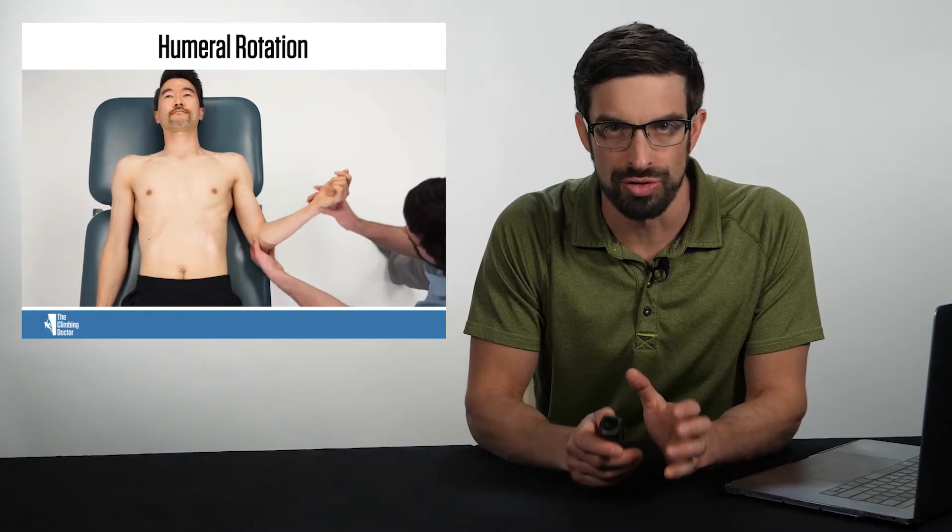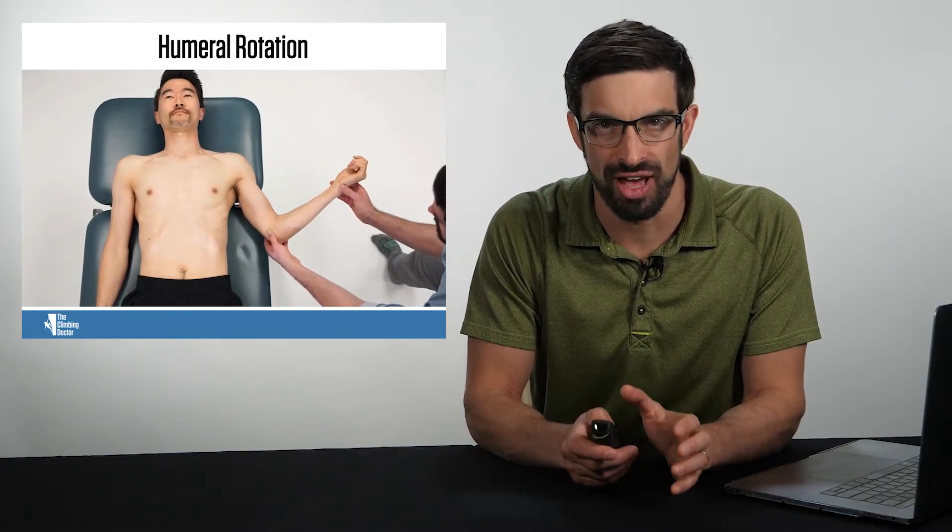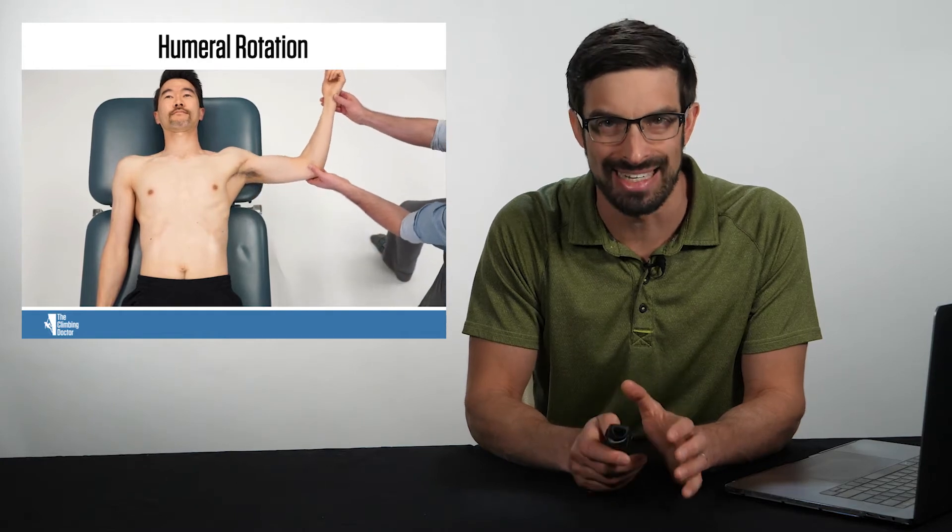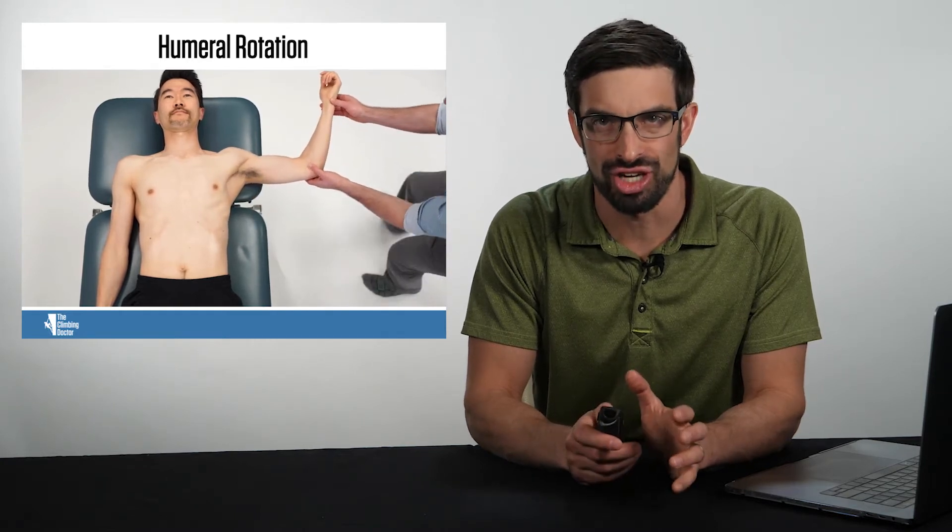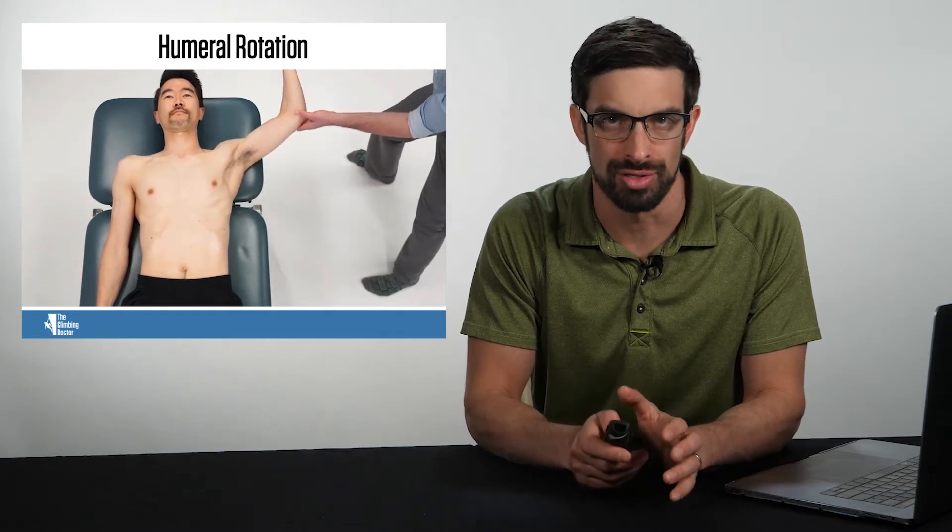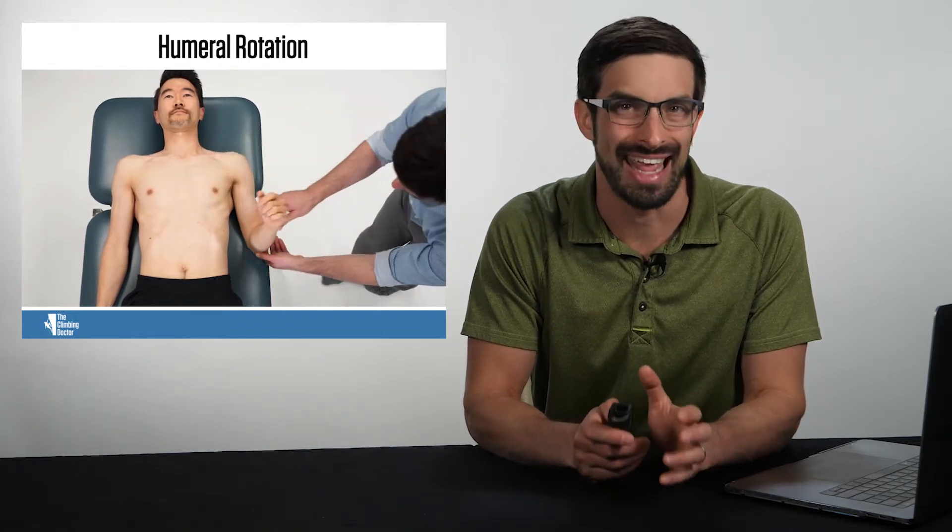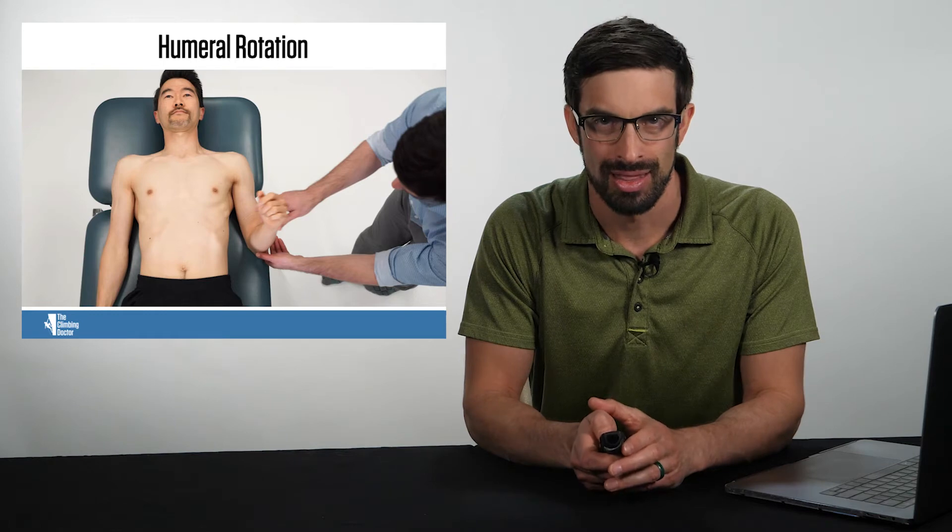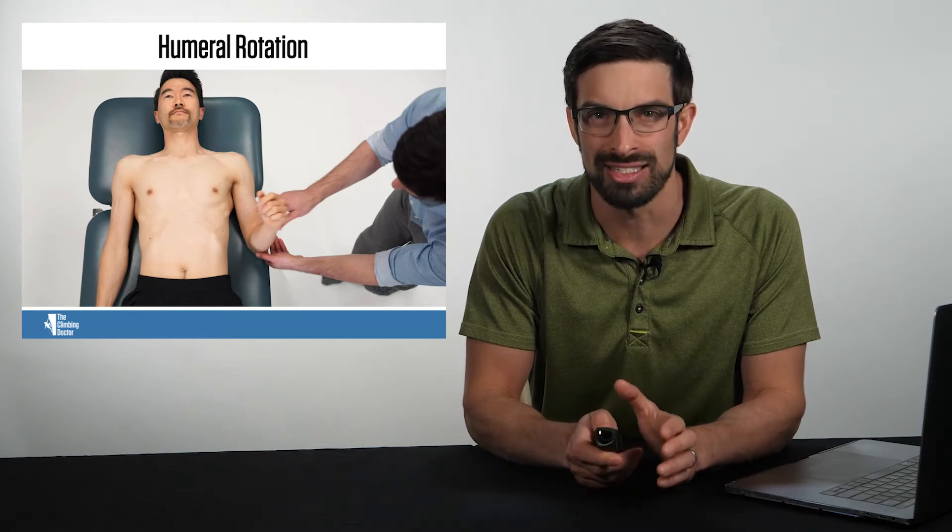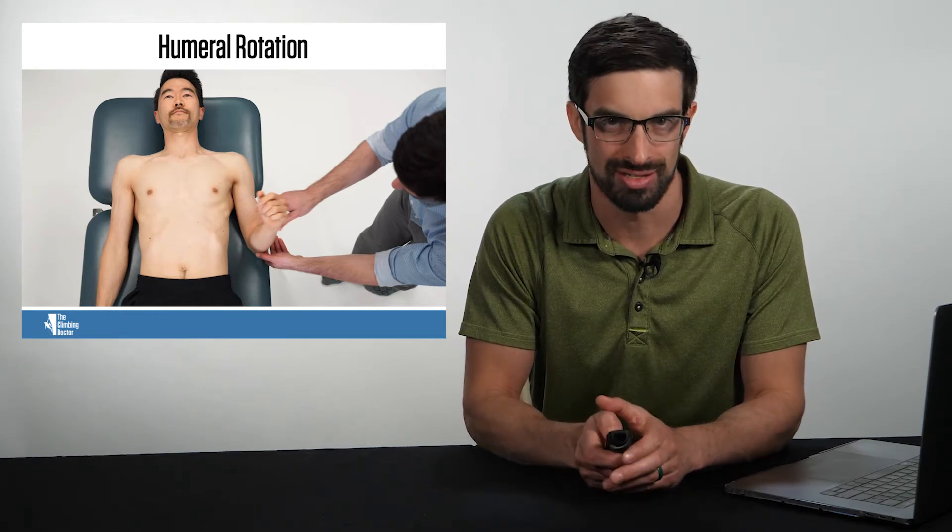Now let's look at humeral external rotation. You can check at 45 degrees, you can check at 90 degrees, you can also check it at 135 degrees. One final position as well, you can check it at 180 degrees.